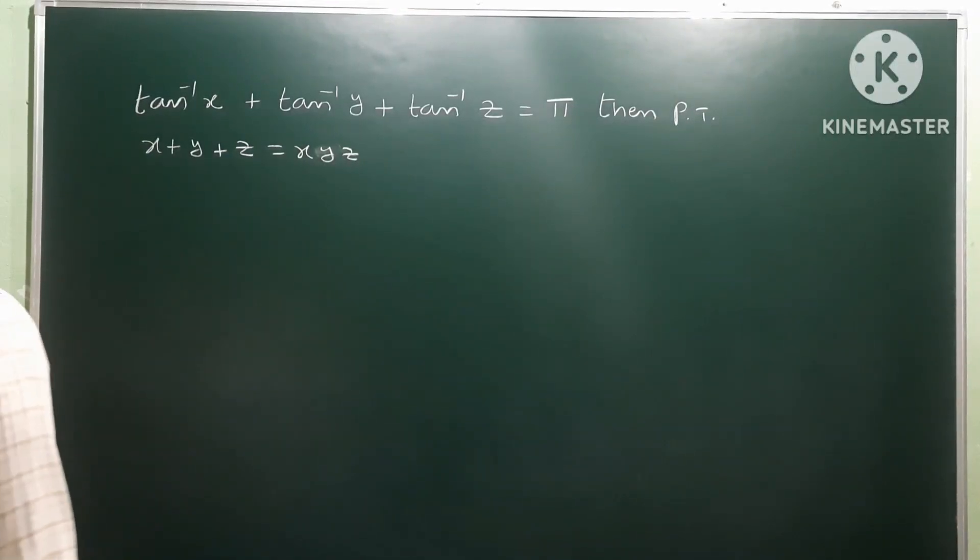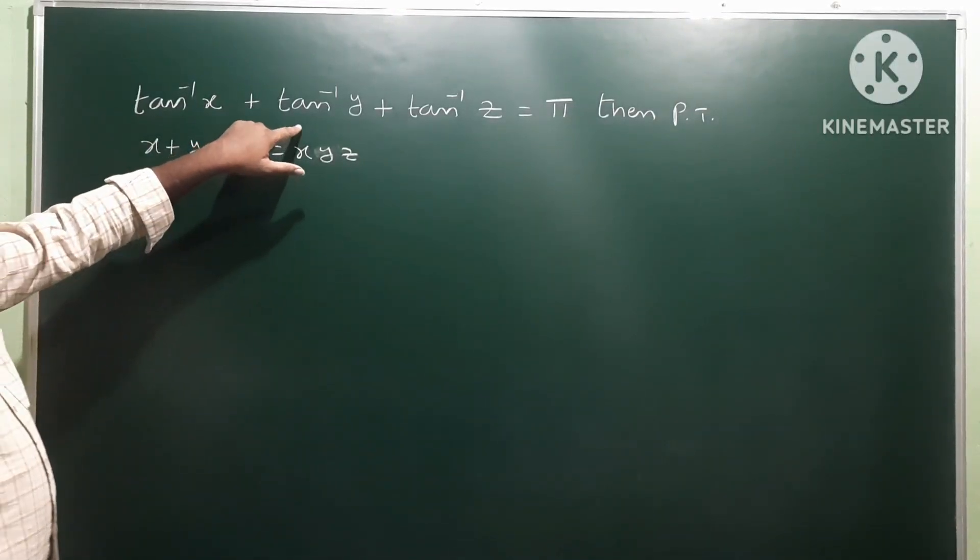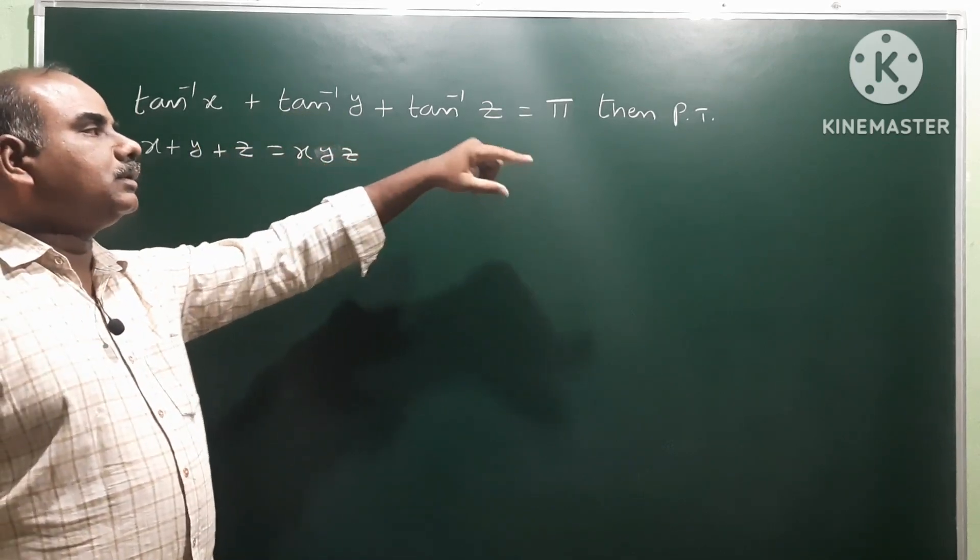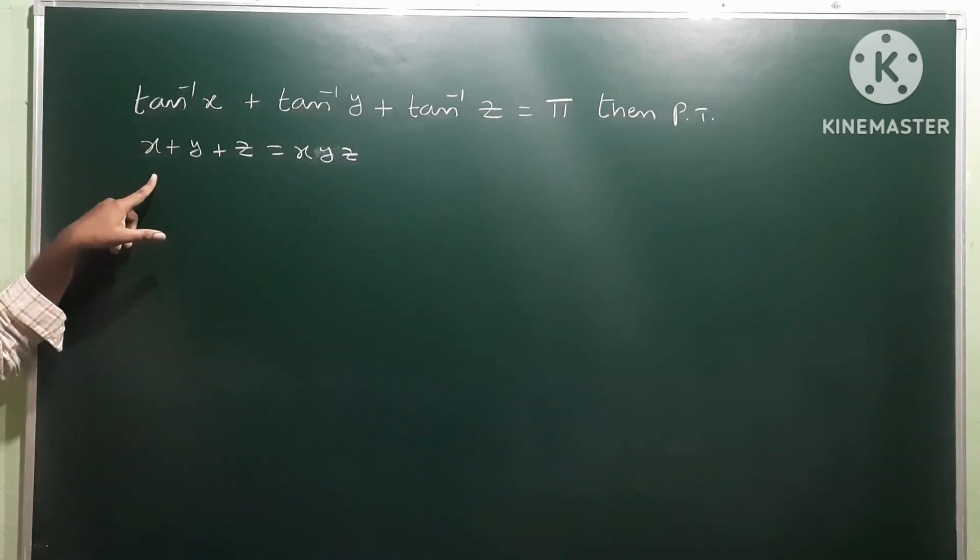Okay, next one. Tan inverse x plus tan inverse y plus tan inverse z is equal to π. Then prove that x plus y plus z is equal to x into y into z.